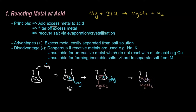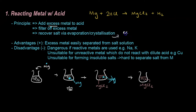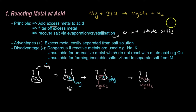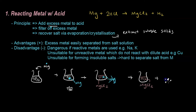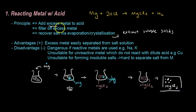The next step is to filter off the excess metal — just do normal filtration to separate the solid magnesium from the liquid. Now you have just a salt solution of MgCl₂. Since the salt is soluble, you can't just take it out with tweezers, so you use evaporation or crystallization to extract the soluble solid. Once you recover the salt, you get your MgCl₂ solid without the liquid phase.